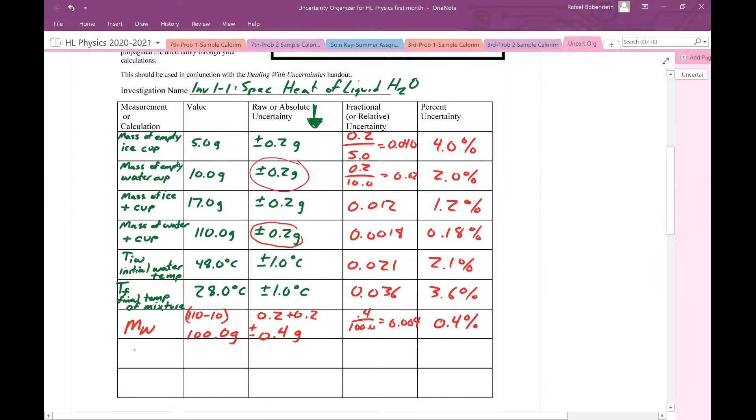So 0.4 percent is the uncertainty in the mass of the water. Another thing I'm going to have to figure out the uncertainty for is the uncertainty in the change in temperature of the water, delta Tw. I'm going to figure out the absolute value, because with uncertainty, we're always dealing with absolute values. In this case, this is 28 minus 48 absolute value, which is basically 20.0 degrees Celsius. Now what did I do again? I subtracted two numbers.